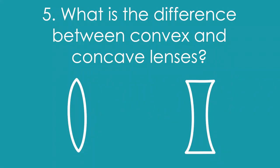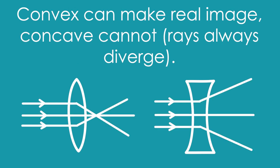What is the difference between convex and concave lenses? Convex lenses can produce real images while concave lenses cannot because the rays always diverge from a concave lens.